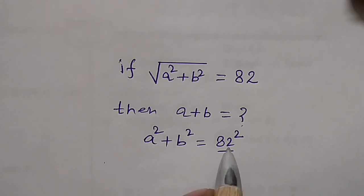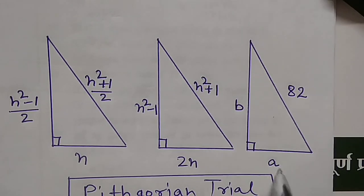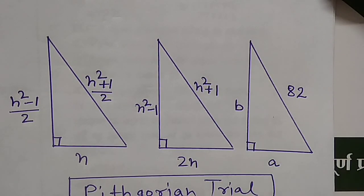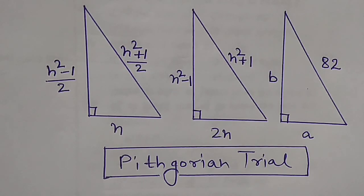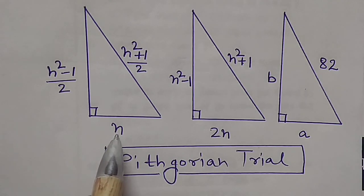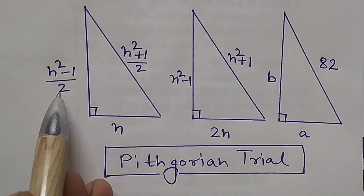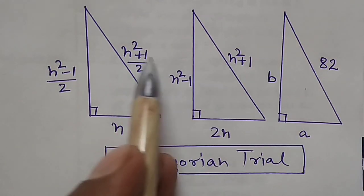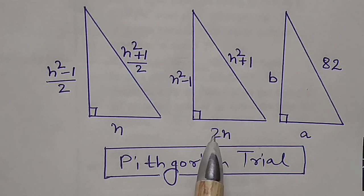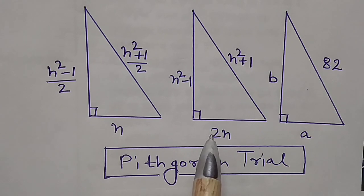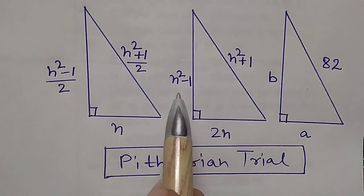So a, b, and 82 are the sides of a right angle triangle. Now we find the Pythagorean triple. If a side of a triangle is an odd number n, then the other sides will be (n² - 1)/2 and (n² + 1)/2. If the side is an even number n, then the other sides will be n² - 1 and n² + 1.